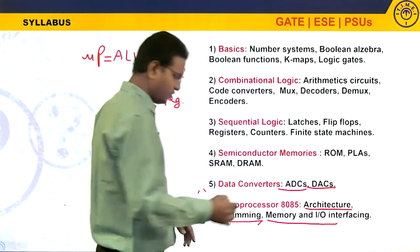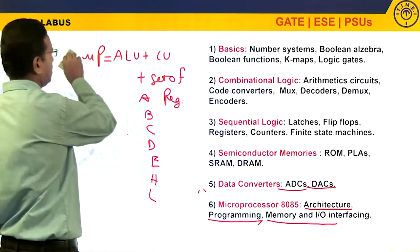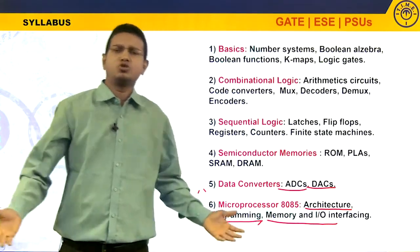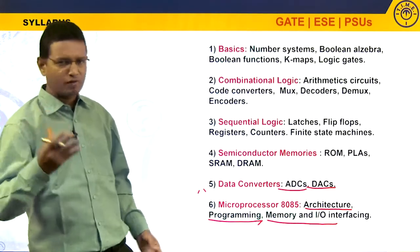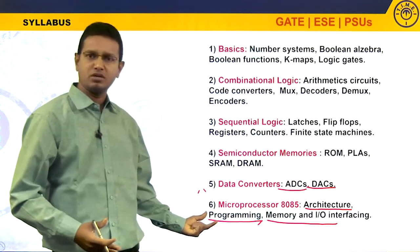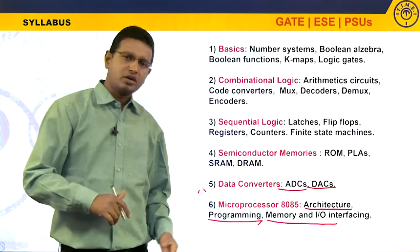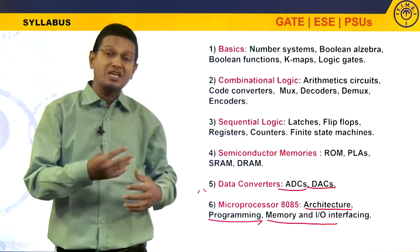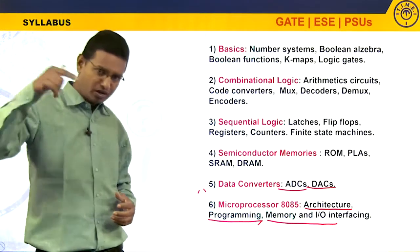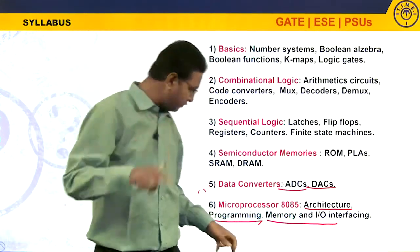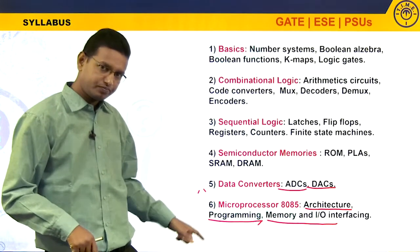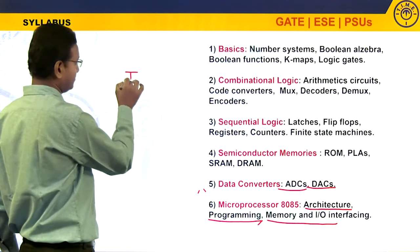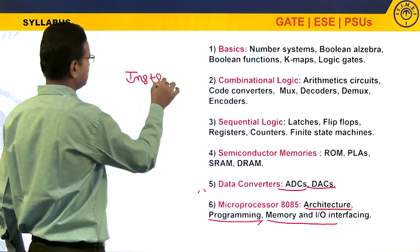Coming to programming — this is very important. You may be good at architecture, but if you are weak in programming, there is no point in knowing the architecture. The main purpose of knowing the architecture is to understand the programming — how data is coming into the microprocessor, how it is going out, and what is happening inside. If you want to be good at programming, the first thing is you should be good at the instruction set, which is very, very important.